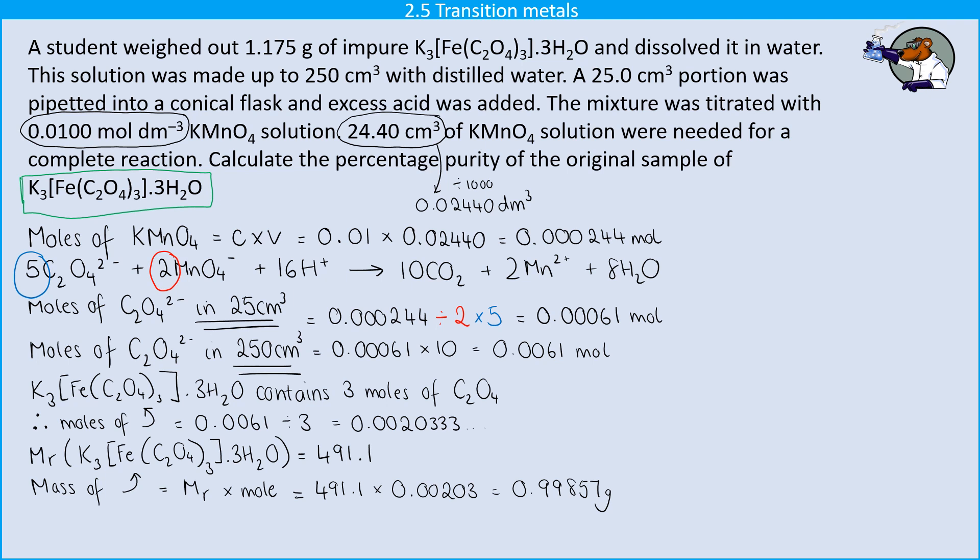So that's how much of that complex I actually have. But I started out with a sample that weighed 1.175 grams. So not all of that original sample was actually this compound. There's some impurity in there. So to work out percentage purity, I'm going to take the mass that I've worked out was actually that compound and divide it by the total mass. And then, of course, I want it as a percentage because it's percentage purity.